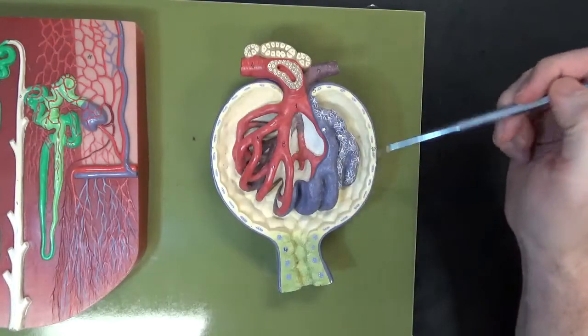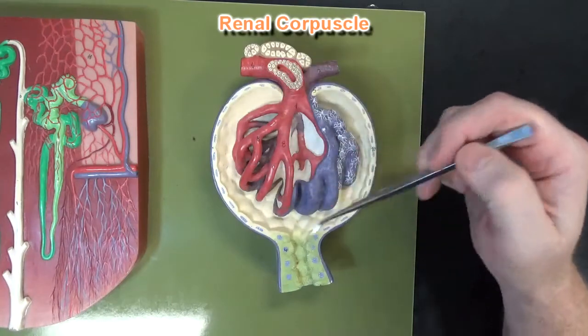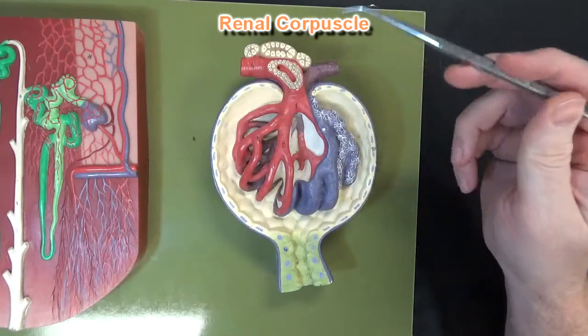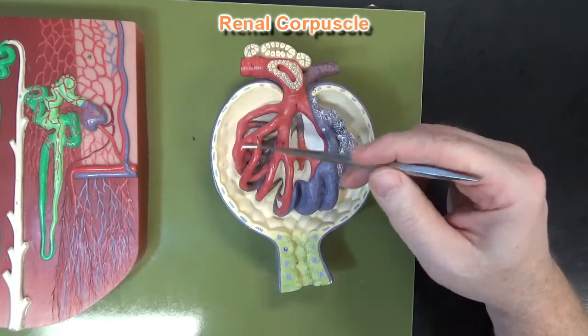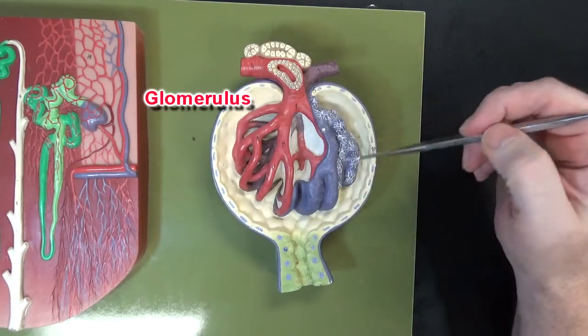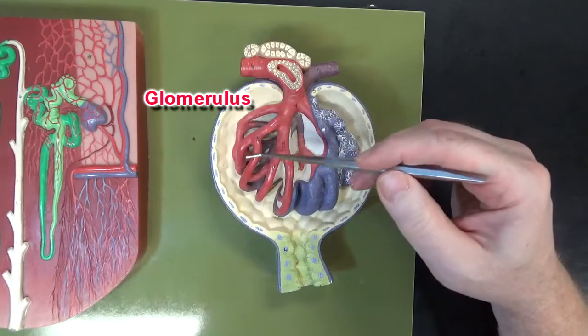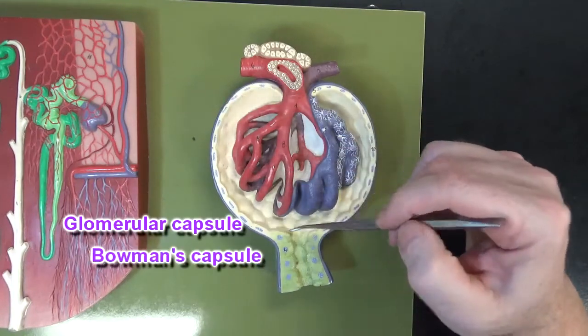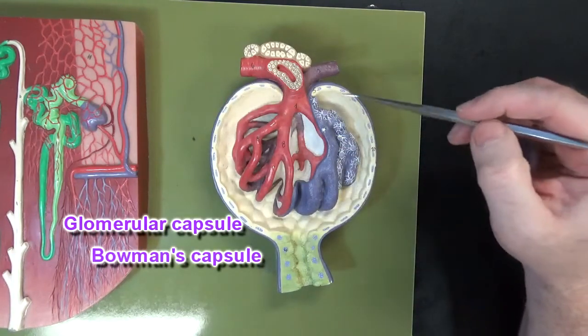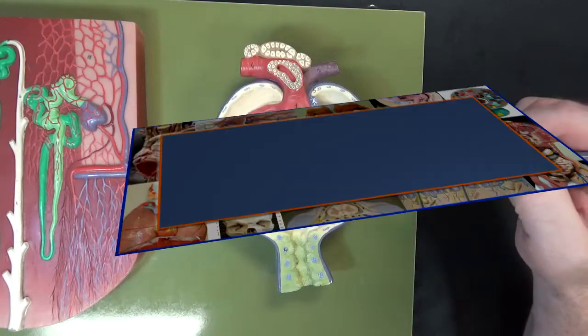What we're looking at here is a renal corpuscle. The renal corpuscle consists of the glomerulus, which is a ball of capillaries, and the glomerular capsule, or Bowman's capsule.